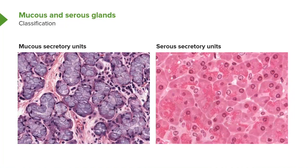I mentioned earlier that there are some cells, such as the goblet cell, that secrete a mucous type product. But there are also other cells that secrete a serous type product. I'll explain what those two types of products really are in a moment.